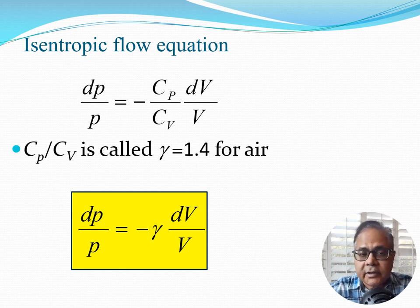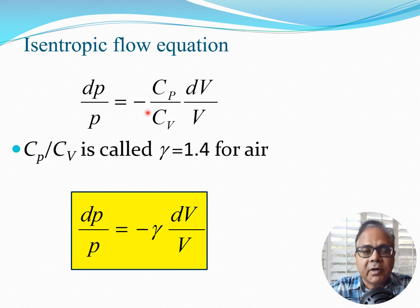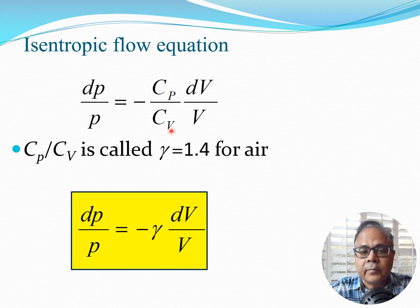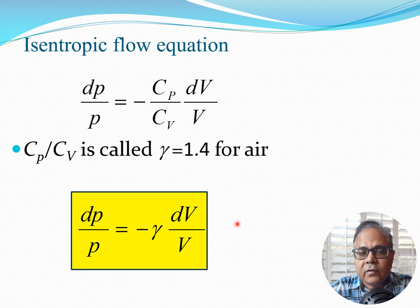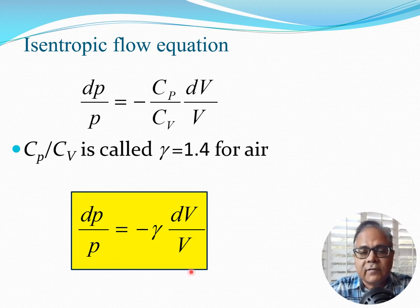In the previous class I talked about the isentropic flow equation, which has the form dp/p = -(cp/cv)·dv/v. Here p is the pressure, v is the volume, and cp and cv are the specific heat values for constant pressure and constant volume respectively. This ratio cp/cv is denoted by the Greek letter gamma; its value is 1.4 for air. So we can write this equation: dp/p = -γ·dv/v.